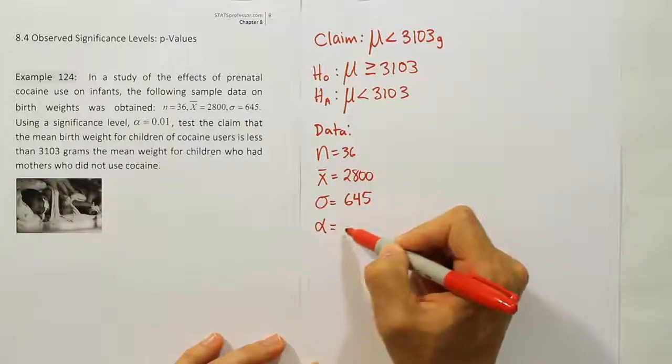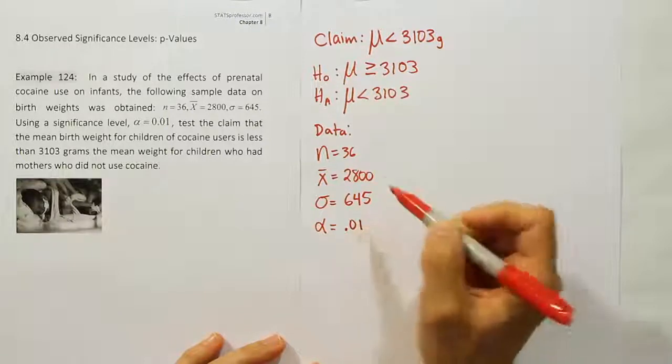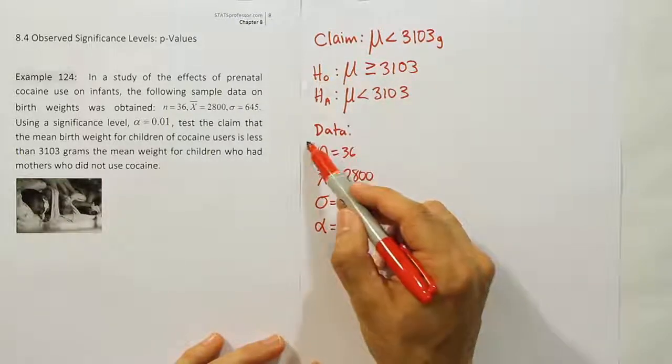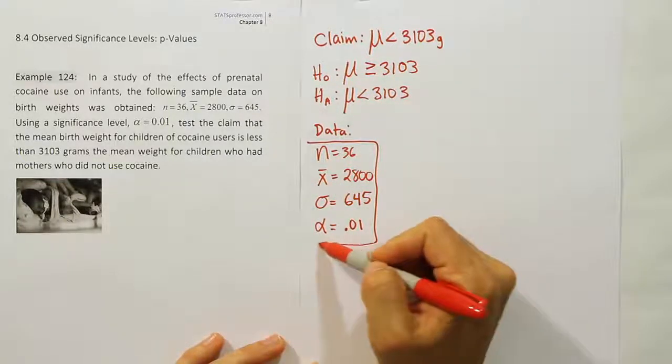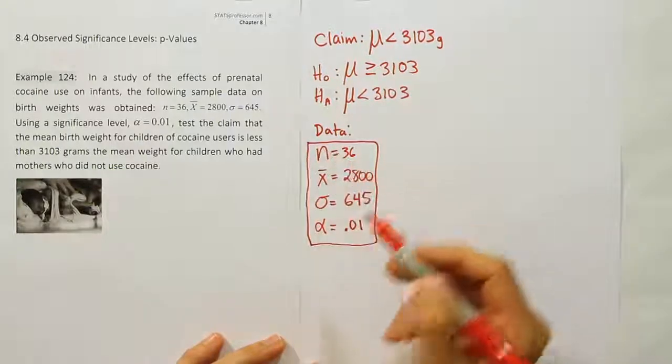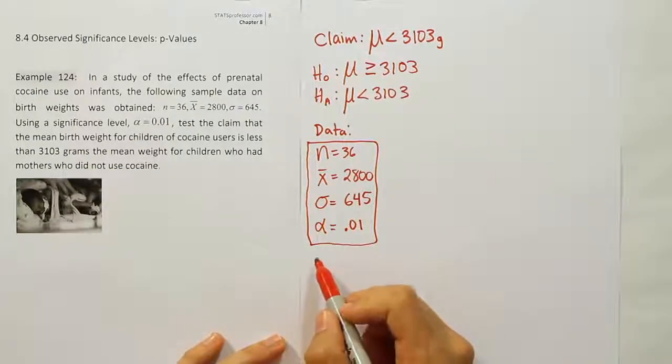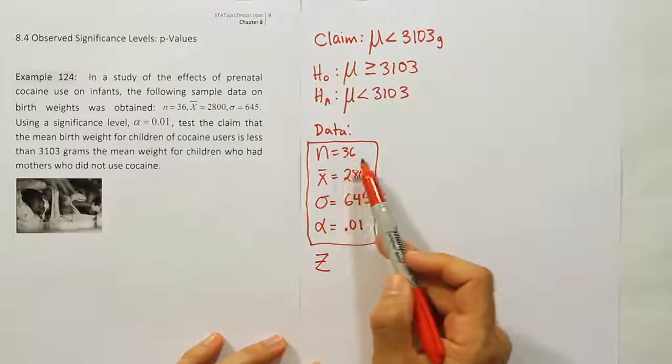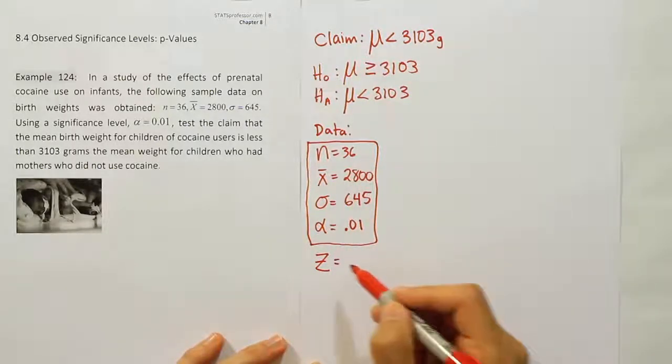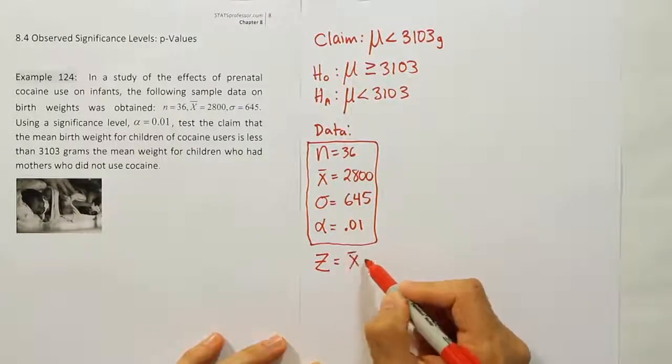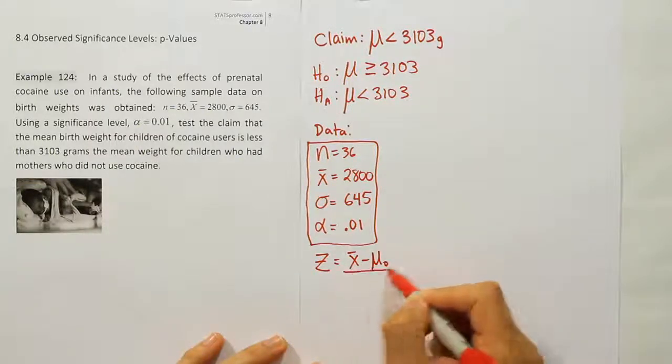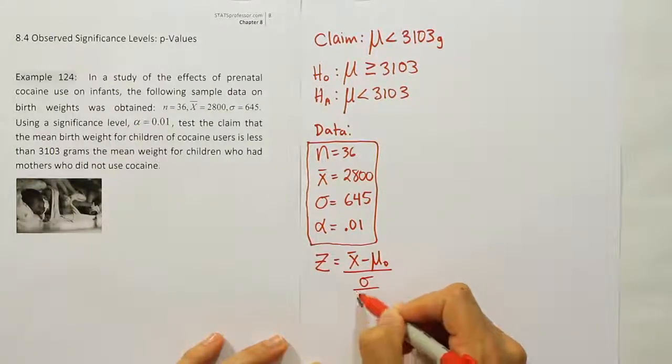And then finally the alpha here is 0.01. So there's my data for the problem. We're going to take that information now and plug it into our test stat. Our test stat will be a z test statistic, and that's because the sample size here is 36. And so that test stat will be z = (x̄ - μ₀)/(σ/√n).